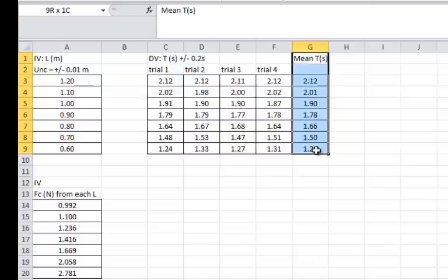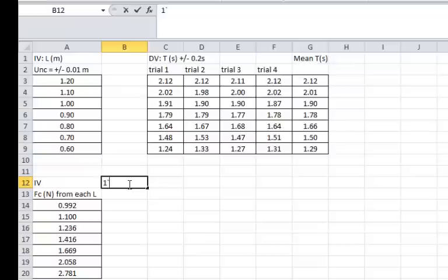Now we need one over these numbers squared, so what we can do is we can just type in one over DV squared. You do one over, click on the number you want, use the little symbol of an arrow above the six, and then the squared value. Once you hit equals, it makes the number for you. That 0.223 is 2.12 put into that formula.